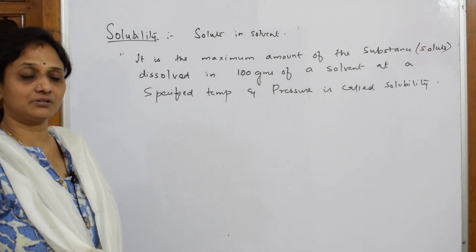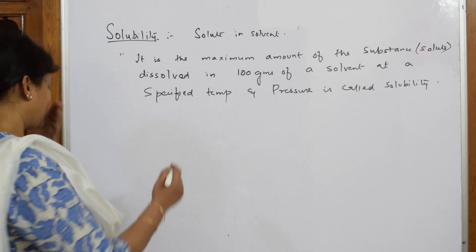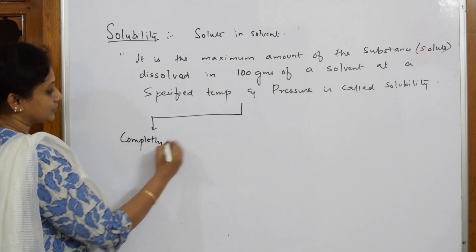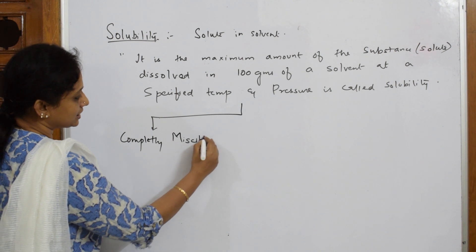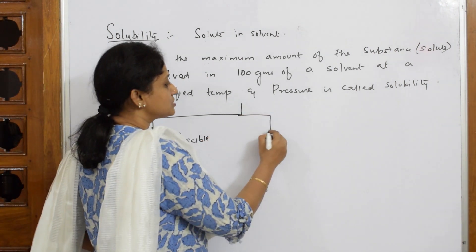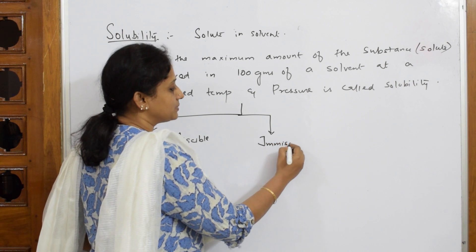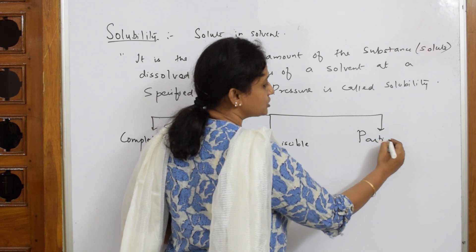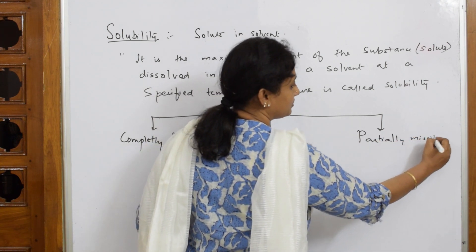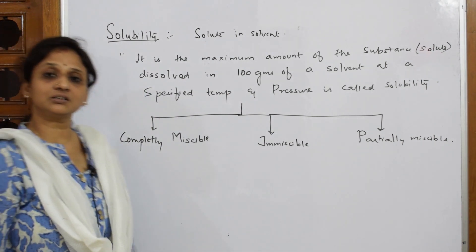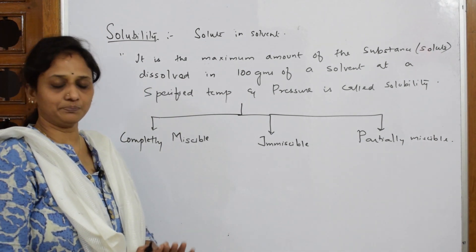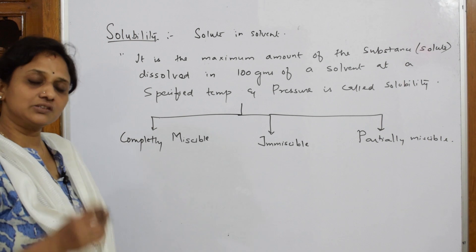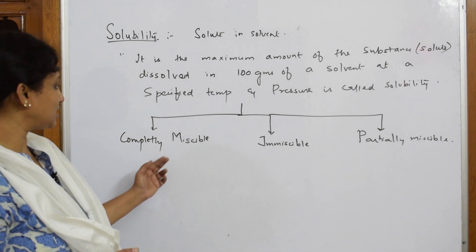Now we have different types of solubility. If a solute is completely miscible, that is one category. If the solute is immiscible, that is another category. If the solute is partially miscible, that is one more category. Completely soluble means the solute dissolves in the solvent at all proportions.